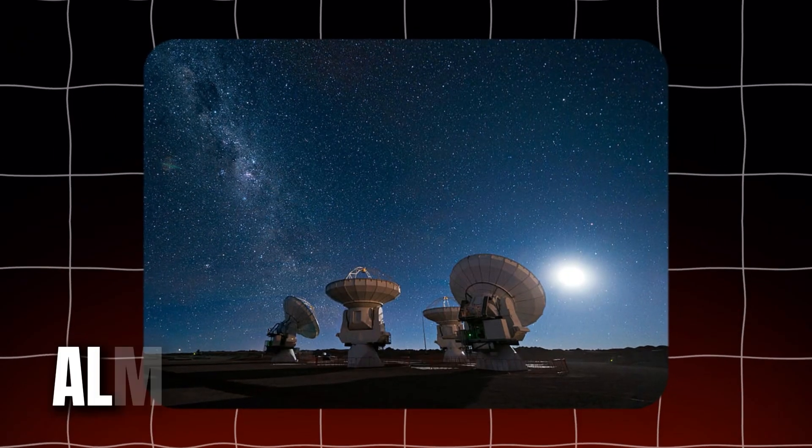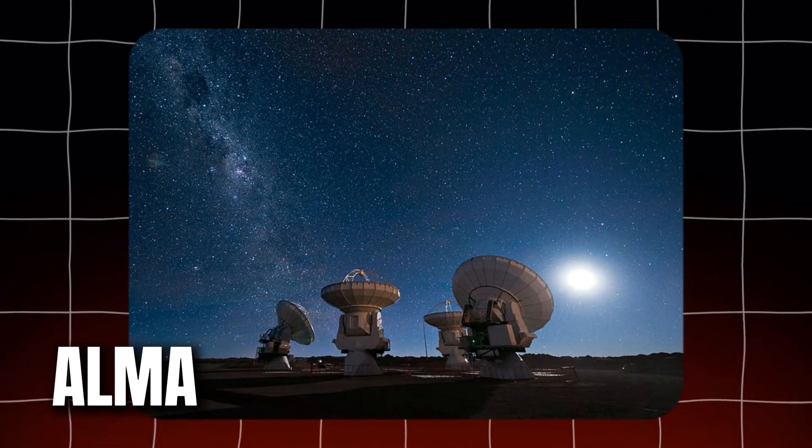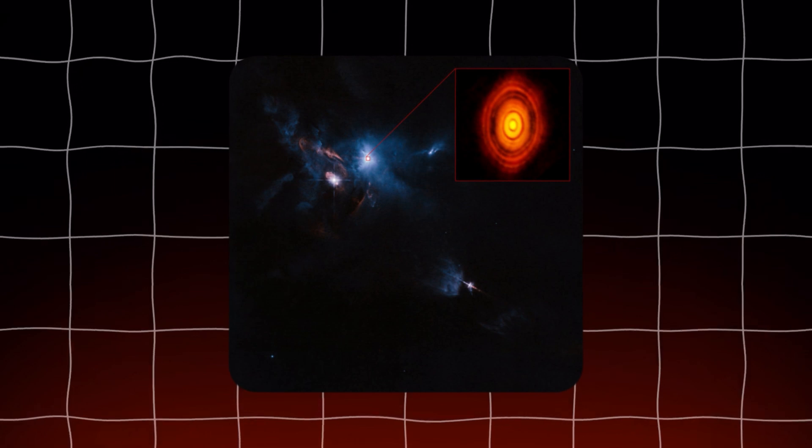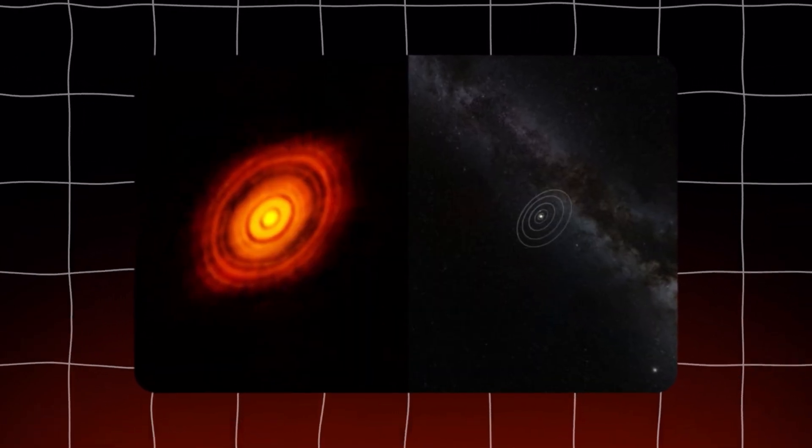Using telescopes like ALMA, which detect millimeter wavelengths of light, astronomers can see these disks clearly. They observe dark gaps in the disk, each corresponding to a young planet that has gathered nearby matter.